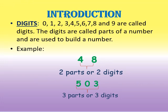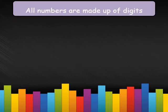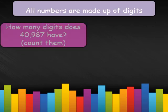Let us start learning about digits. What are digits? 0, 1, 2, 3, 4, 5, 6, 7, 8, and 9 are called digits. These are called parts of a number because by making use of digits, we build a number. For example, 48 is made up of two digits — 4 and 8. 503 is made up of three digits — 5, 0, and 3. All numbers are made up of digits.